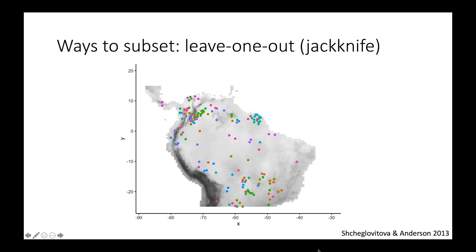So I'm going to go over ways to subset. The first one is called leave-one-out, or a jackknife. What you're doing is each group is a single point. You're building your model on all points but one and evaluating on that one point, and then repeating the process over and over until all the points are exhausted. This technique was shown to be very effective for low-data species. The reference is Shcheglovitova and Anderson 2013. If you have a low-data species, this might be a good technique to use because it allows you to maximize the number of points available for training.